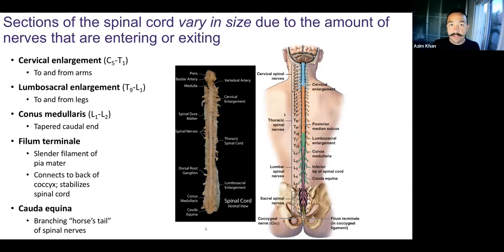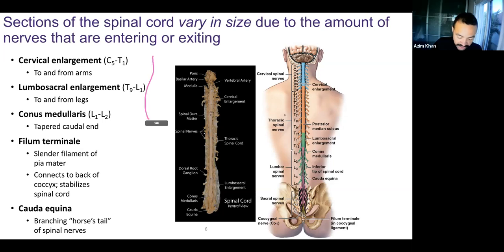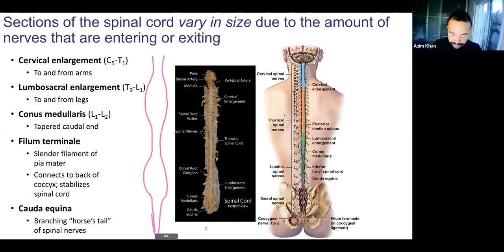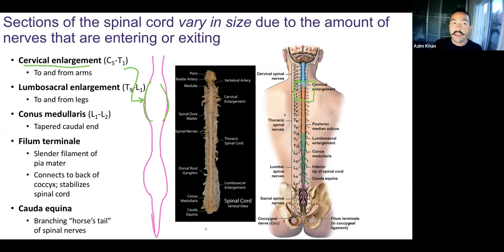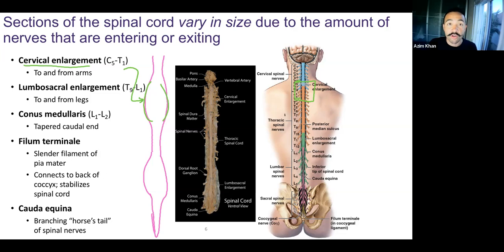In terms of the gross anatomy, the spinal cord isn't just one straight line — it has texture. There are narrow portions and bulges. The first bulge is called the cervical enlargement, between C5 and T1. It gets bigger in this area because there are more neurons going to and from the arms. Because there are more neurons — more cell bodies and axons — you need more nervous tissue, so it's bigger in the cervical enlargement area.